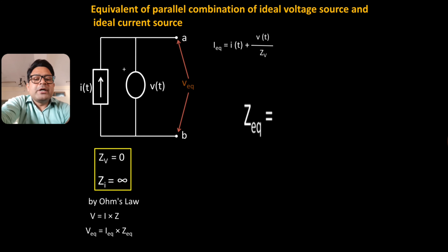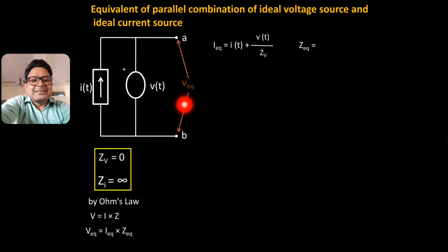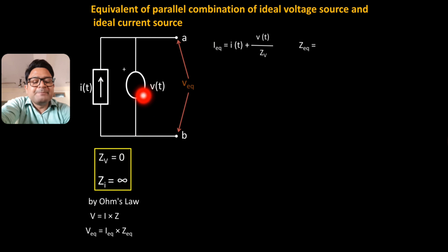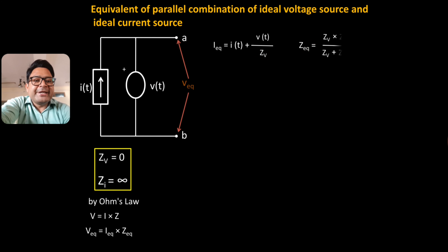Now let us find the equivalent impedance. ZV and ZI are the internal impedances of the ideal voltage source and ideal current source, which are connected in parallel. So we take their parallel combination: ZEQ = (ZV × ZI) / (ZV + ZI).